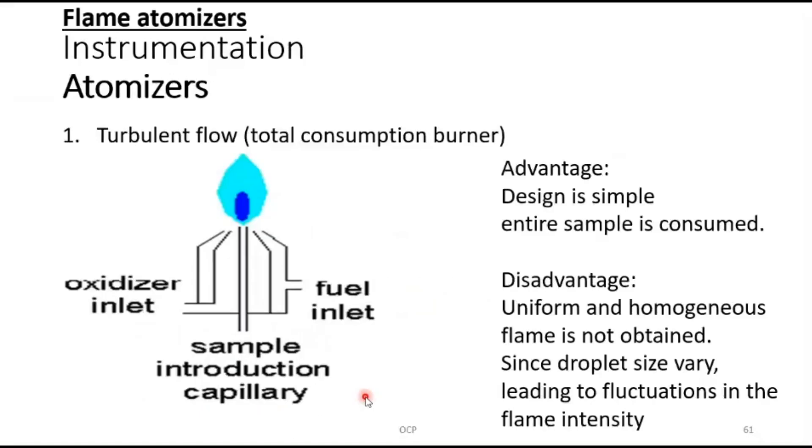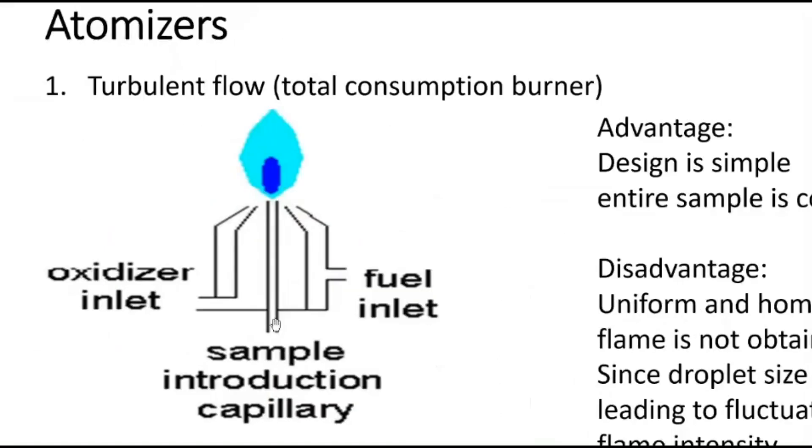Let's start with the first one, called turbulent flow or total consumption burner. Observe this diagram. At the center there is a capillary from which sample is introduced. There is one inlet for oxidizer, which may be simply air or oxygen.